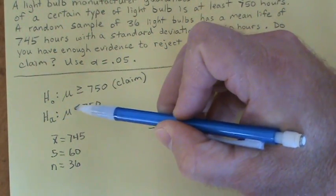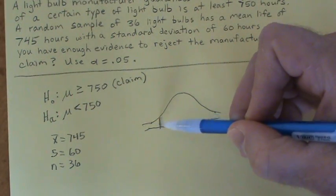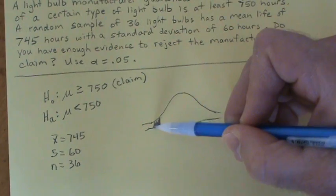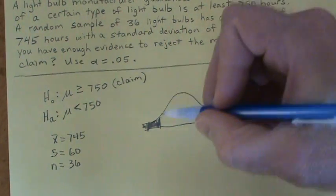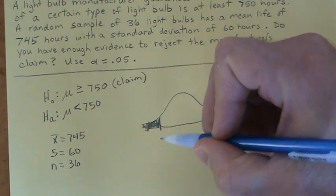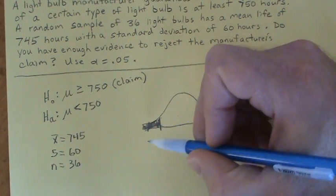Because my alternative hypothesis has this symbol and it's pointing to the left, it's going to be a left tail test. So somewhere out here is going to be a rejection region on the left side, so I just shade that in. There's my rejection region. This value right here is called our critical value that separates the rejection region from the non-rejection region.